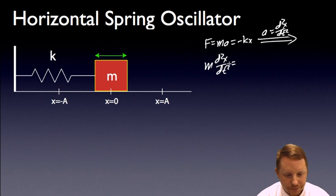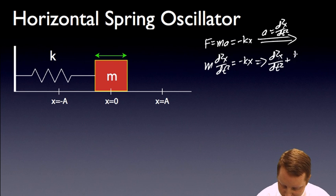must equal minus kx. Or, with a little bit of rearrangement, we could say that d squared x over dt squared plus k over m times x equals zero.